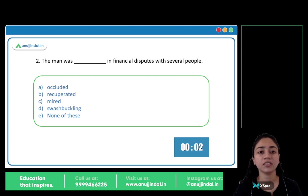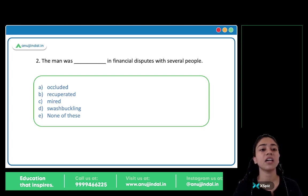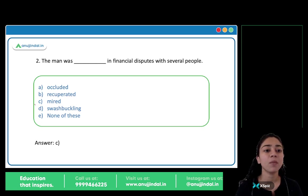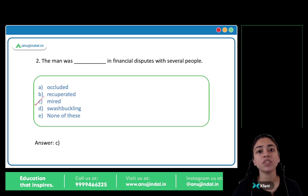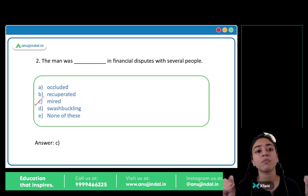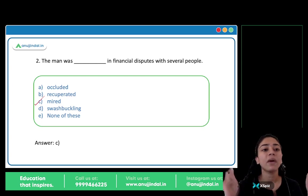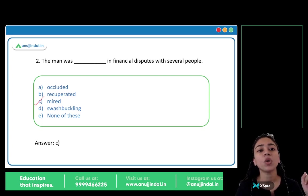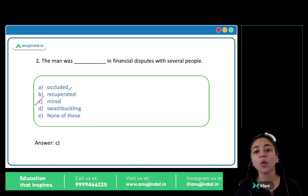The answer is option C, mired. Mired means stuck in a difficult situation. The man was mired in financial disputes — he was stuck in financial troubles. The other options: occluded means to stop or obstruct, recuperate means to recover or regain.